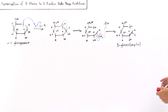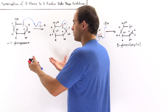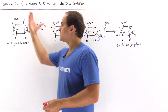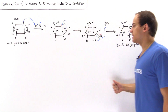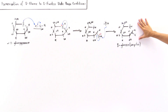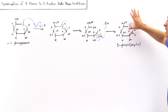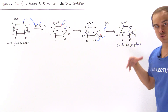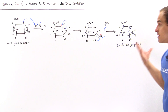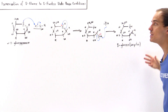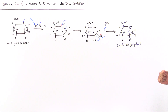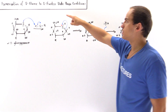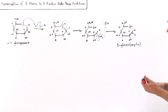At equilibrium, the cyclic version will predominate over the less stable open-chain form. But as long as we have a little bit of the open-chain form left over at equilibrium, it will undergo the next several reactions we're going to discuss to produce our D-fructose.